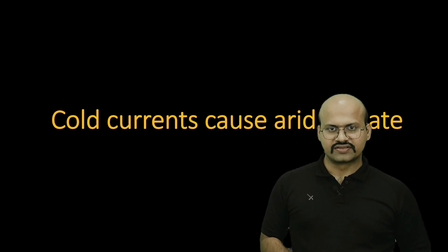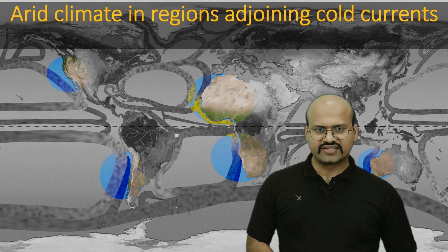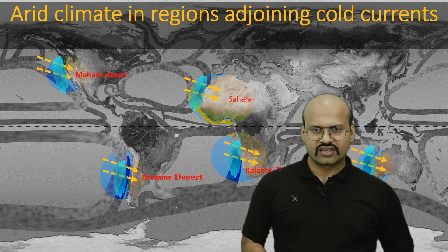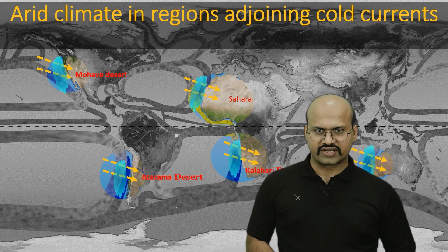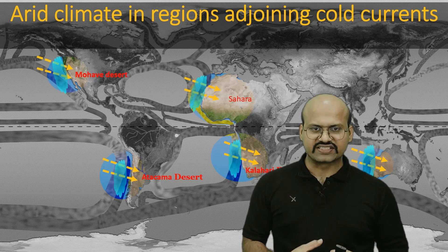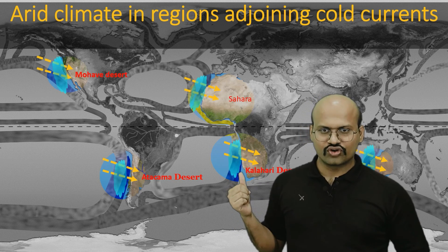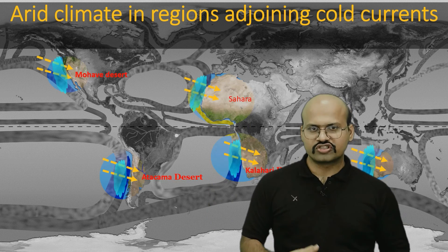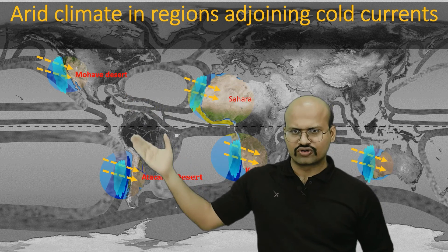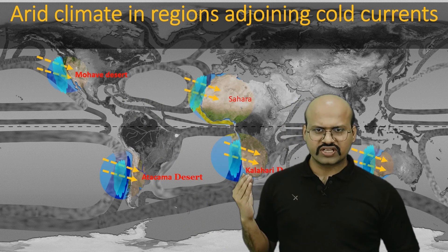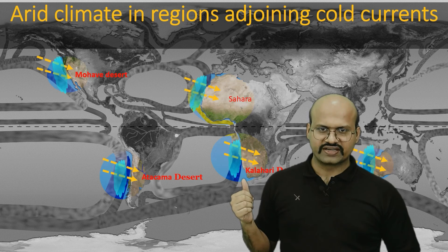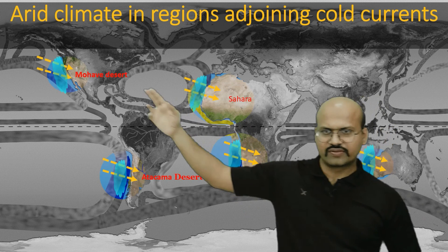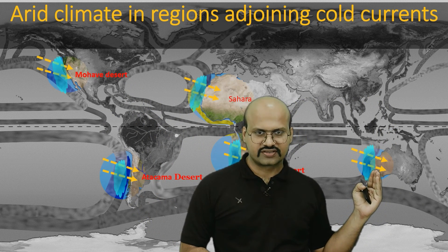Cold currents cause arid climates on the western margins of continents in the tropical region. In the highlighted regions we can see cold ocean currents. When wind flows over these cold ocean currents, the moisture condenses to form fog. When these winds reach the coastal margins, they have no moisture left and therefore bring no rainfall. As a result, the coastal regions adjoining cold ocean currents are generally desert-like — we see the Kalahari Desert, Sahara Desert, Mojave Desert, Atacama Desert, and the West Australian Desert, all lying beside cold ocean currents.